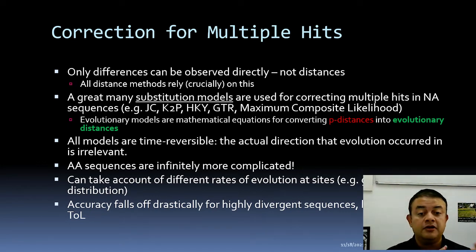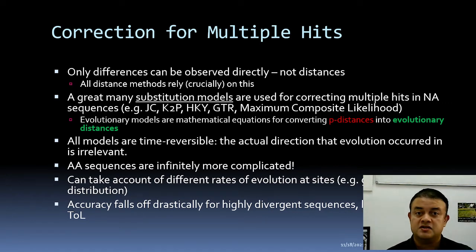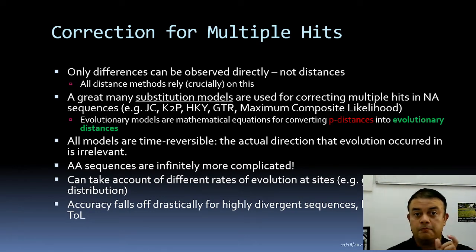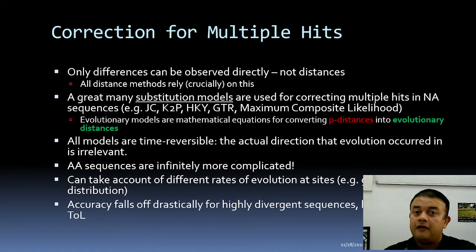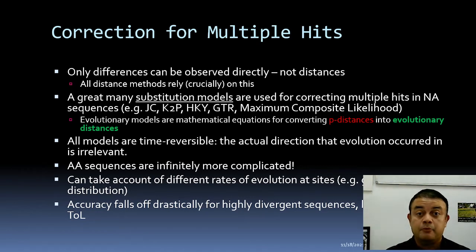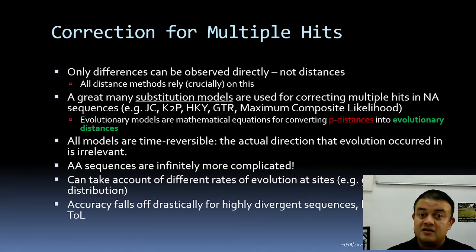Models can also account for different rates of evolution at different sites — this is called the gamma distribution, described by a shape parameter. Within a single gene, some regions evolve much faster than others. For example, in antigens the epitopes — the antibody-determining regions — evolve super fast to evade the immune system. The spike protein epitopes of SARS-CoV-2 (novel coronavirus) evolve very rapidly, so the gamma parameter needs to be incorporated.